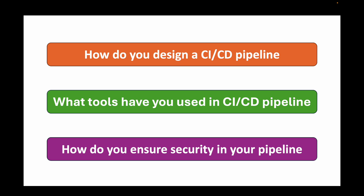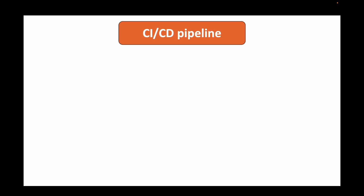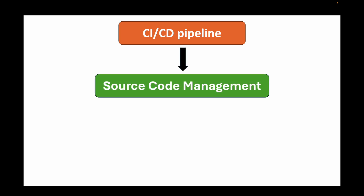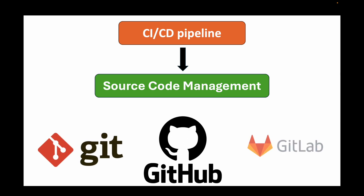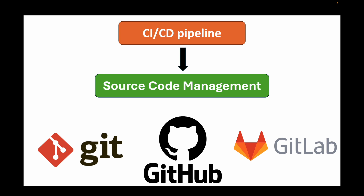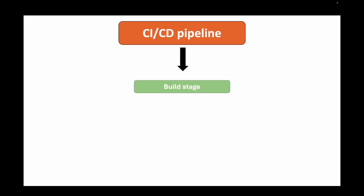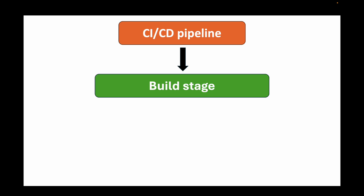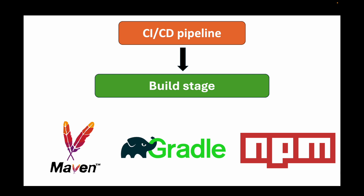Let's talk about the core components of a typical CI/CD pipeline. The first stage is Source Code Management (SCM), where tools like GitHub or GitLab are used to manage code changes and maintain a central repository. The next stage is the build stage, where tools like Maven, Gradle, or npm compile the code and create deployable packages — the tool depending on your platform and programming language.